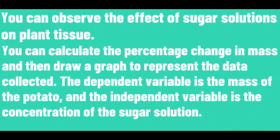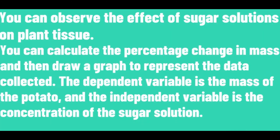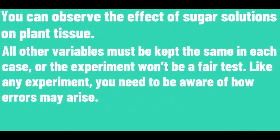You can calculate the percentage change in mass, and then draw a graph to represent the data collected. The dependent variable is the mass of the potato, and the independent variable is the concentration of the sugar solution. All other variables must be kept the same in each case, or the experiment won't be a fair test.